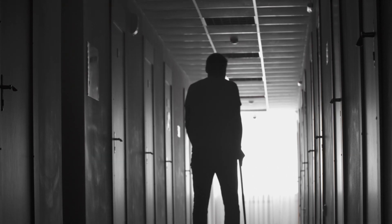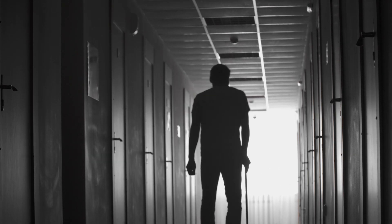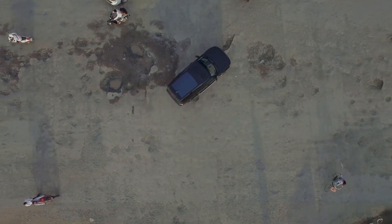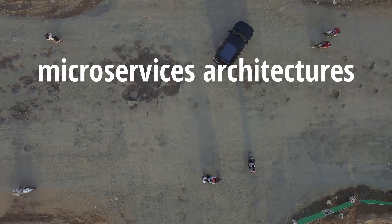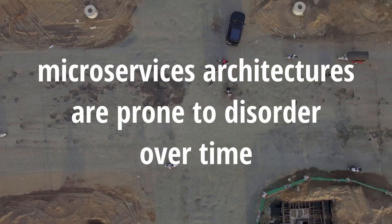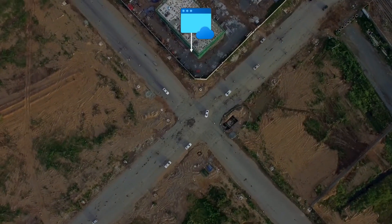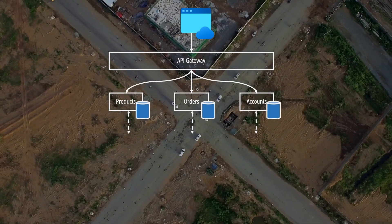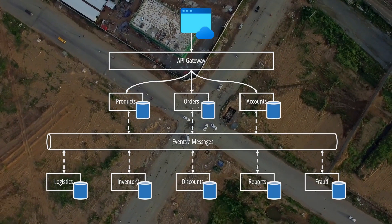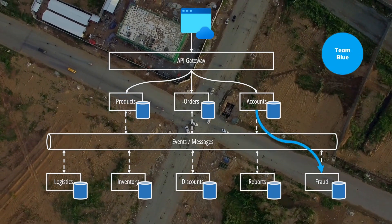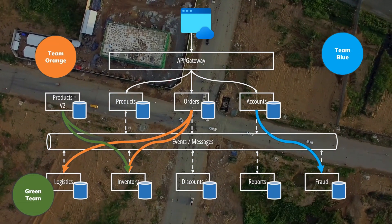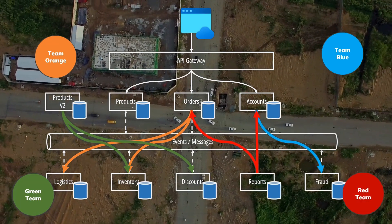They have more moving parts and with them more chances of issues. Entropy means disorder. As you can imagine, microservices architectures are prone to disorder over time. We might start with a well-defined design and clear integration patterns. However, the biggest challenge is safeguarding the design as the system grows and new features and teams are added to the product.